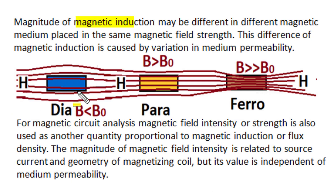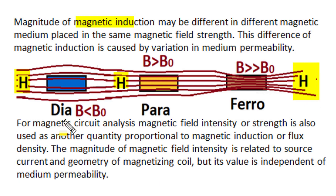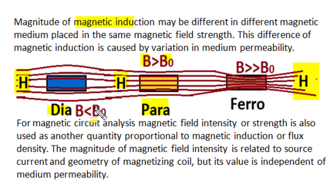The magnitude of magnetic flux density or magnetic induction may differ in different magnetic media placed in the same magnetic field intensity H. For example, if copper, manganese, and iron are placed in the same magnetic field of intensity H: in copper, a diamagnetic material, magnetic induction is slightly less than in air — but the difference is very small. In manganese, a paramagnetic material, internal flux density is slightly higher than in air. In both diamagnetic and paramagnetic materials, the variation from air is minor.